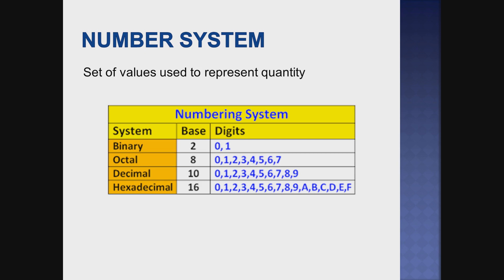Number system is nothing but it is a set of values used to represent quantity. Number system has four classifications: that is binary, octal, decimal, and hexadecimal.